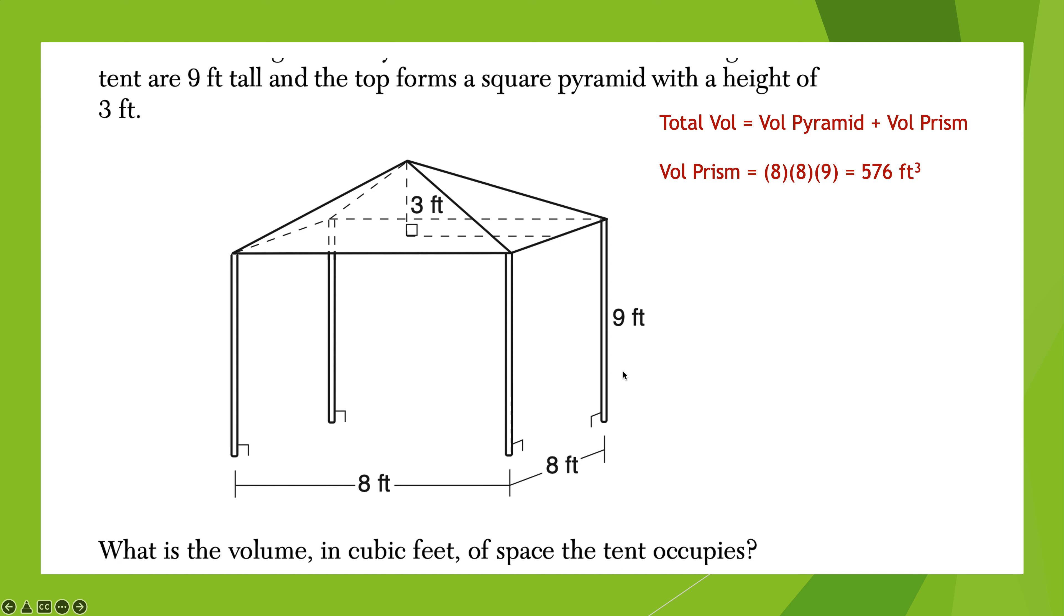If I put those two volumes together, I have the total volume in cubic feet of space that the tent occupies. The total volume is the volume of the pyramid plus the volume of the prism. Let's do the prism first. The prism will be the area of the base, which is 64, times the height, which is 9. That works out to be 576 cubic feet. Now we need to do the volume of the pyramid. The pyramid has the same base, 8 times 8, but now the height is 3. So the volume of the pyramid will be 1 third, because any time you come to a point, you divide by 3. The area of the base, which is 8 times 8, times the height, which is 3. If I do 1 third times 8 times 8 times 3, I get 64 cubic feet. I add them up, and I get 576 plus 64, which is 640 cubic feet.